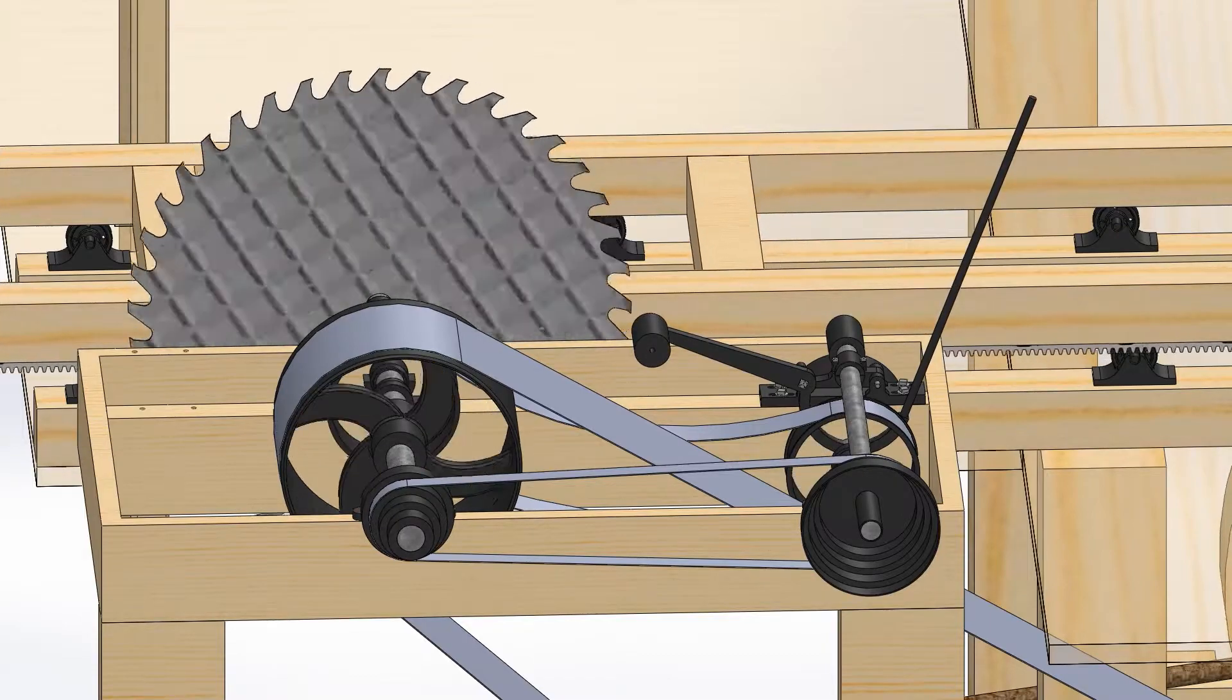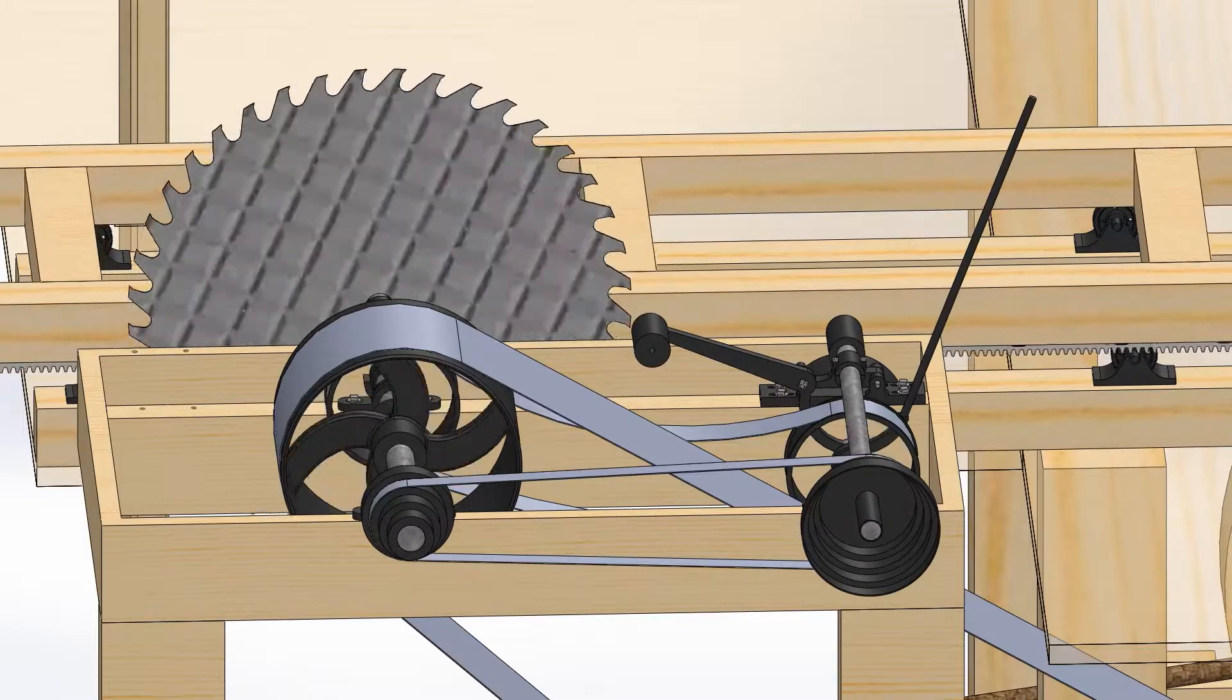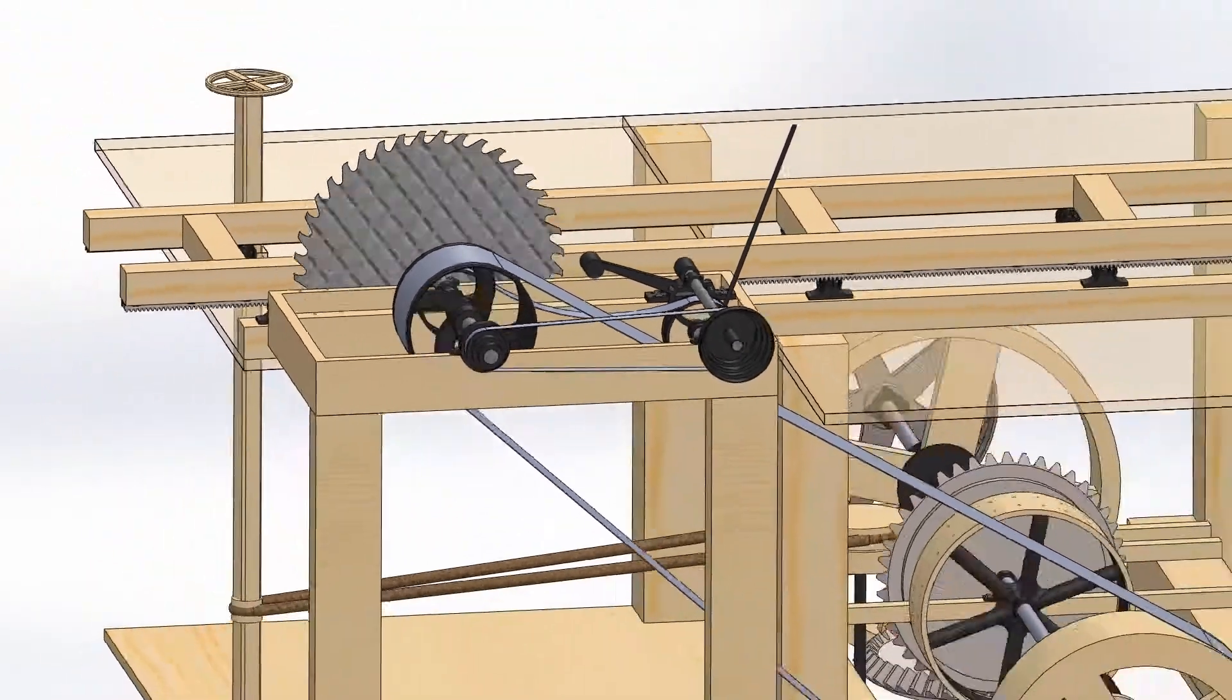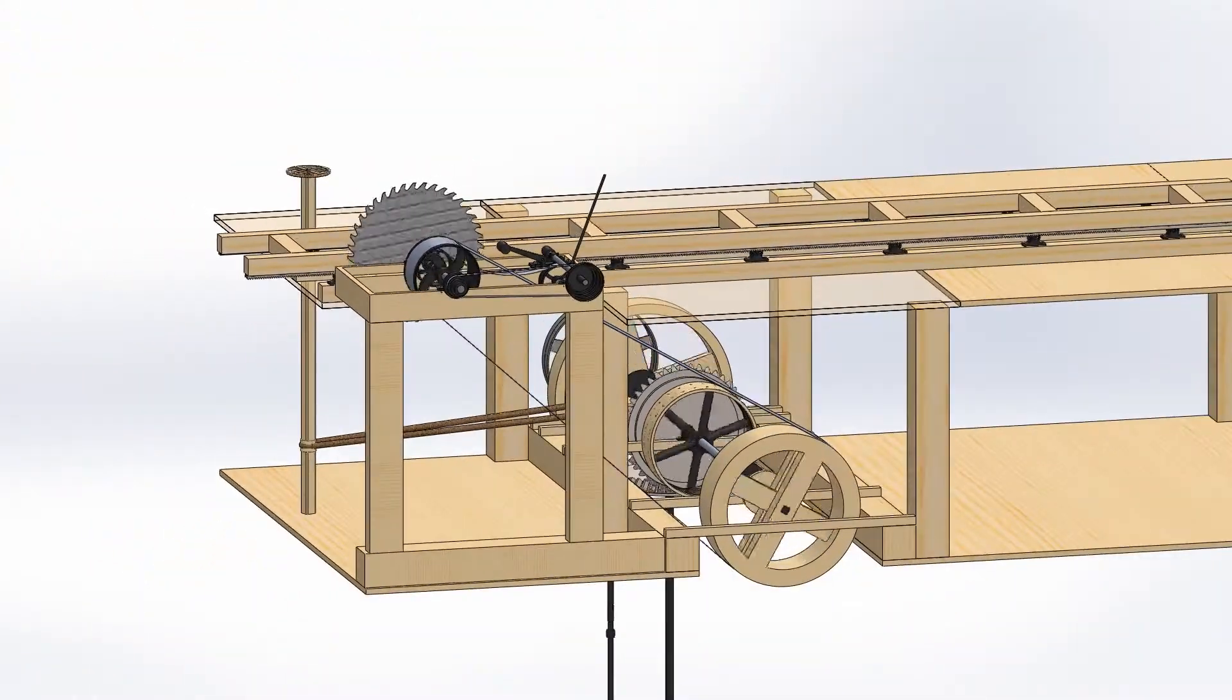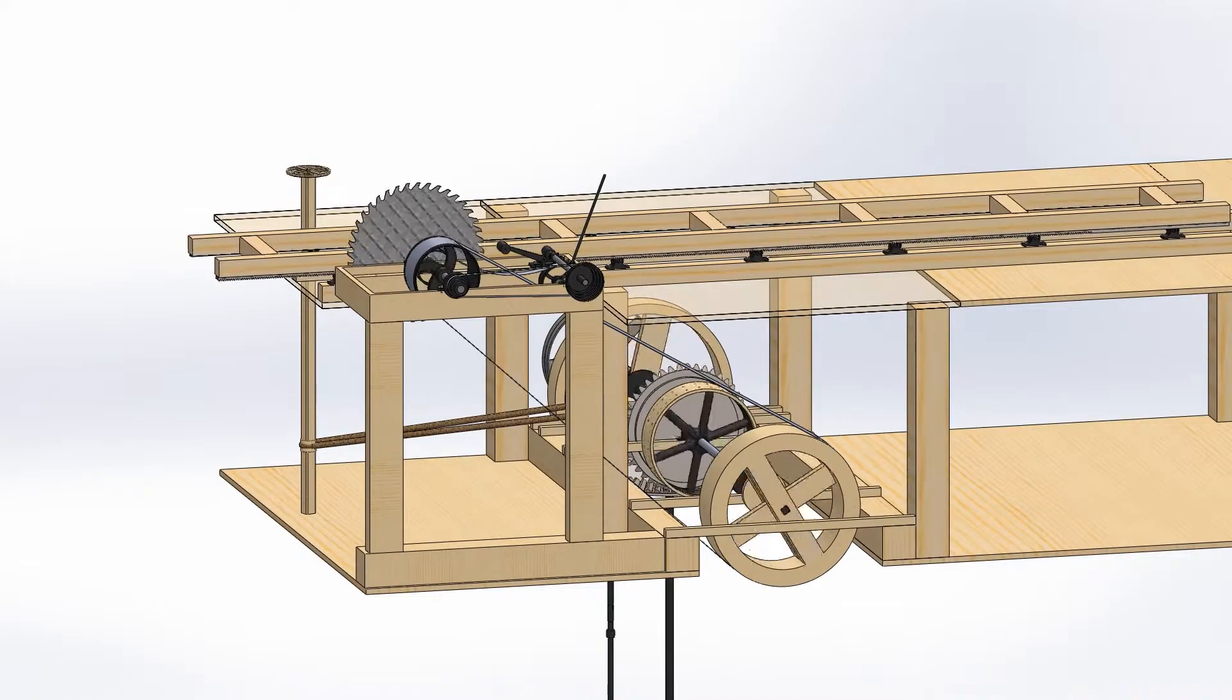This spins a pinion gear that connects to a rack on the underside of the carriage, pushing it towards the saw. The amount of pressure on the lever controls the normal force on the friction wheel, which provides some control over the forward speed of the carriage.